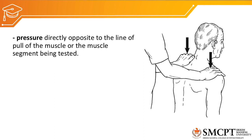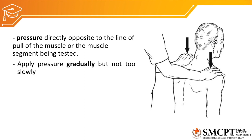The next principle is pressure. When we apply pressure to resist movement against gravity, the force vector should be opposite to the line of muscle pull — our vector against the muscle's vector. The pressure applied for minimal and maximal resistance should be applied gradually so the muscle has time to resist; sudden pressure application may cause muscle injury.